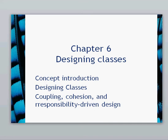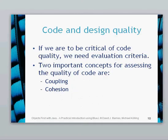This is a chapter 6 video and we're looking at designing classes. The whole idea is to improve the coding and how the code is written. We're looking at coupling, cohesion, responsibility-driven design and reuse as well. So if we're going to be critical of how code is written, we need some criteria: coupling, cohesion, reusability, and responsibility-driven classes.